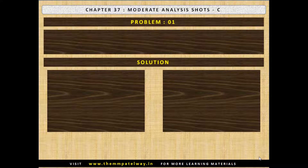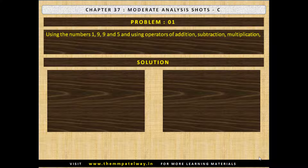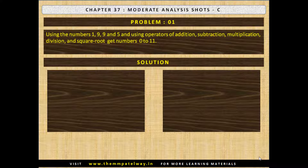Problem No. 1. Using the numbers 1, 9, 9 and 5, and using operators of addition, subtraction, multiplication, division and square root, get numbers 0 to 11. For example, 1 into 9 minus 9 plus 5 equals 5. Now stop the video and solve the puzzle.